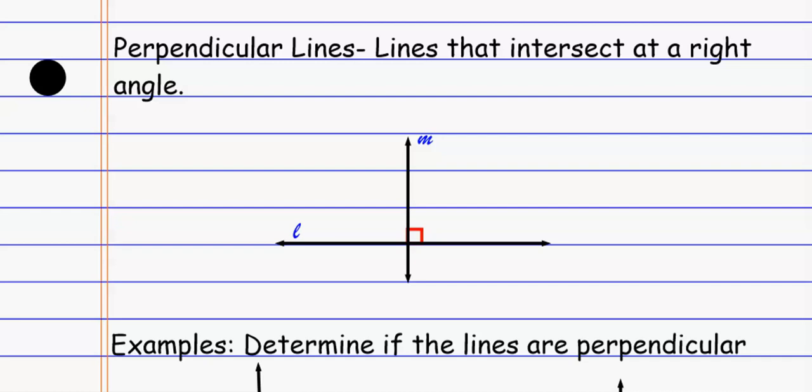And we list perpendicular using this little symbol. It's just a little set of perpendicular lines. So I might say that M is perpendicular to L. Likewise, if I had parallel lines, I would say M is parallel to L. So we'll use that perpendicular symbol to abbreviate this thing at some point here.